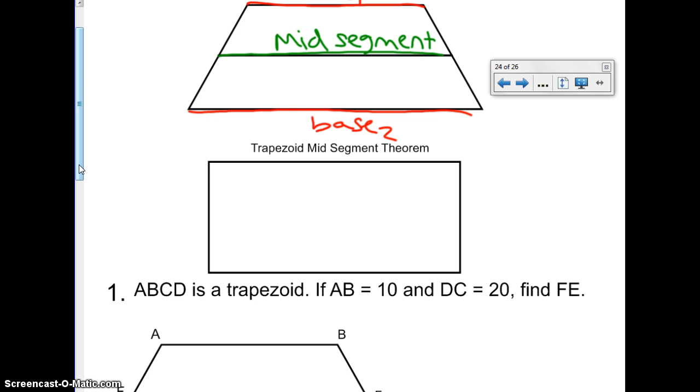The Mid-Segment Theorem looks like this. Base 1 plus Base 2 divided by 2 equals the Mid-Segment. And that's it. Super simple. It's like finding the midpoint almost, right?